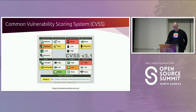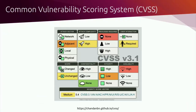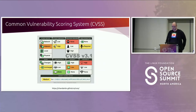CVSS, or Common Vulnerability Scoring System, is how we assign severity to vulnerabilities. CVSS scores are not perfect — sometimes they do an extremely poor job of quantifying a vulnerability. Nonetheless, CVSS version 3.1 is the metric that is used. It roughly describes how an attack occurs and the kind of impact it has.